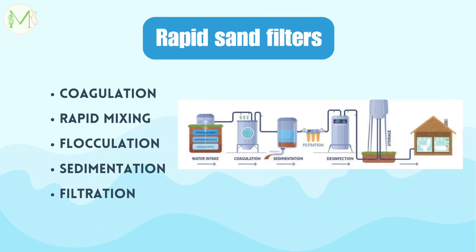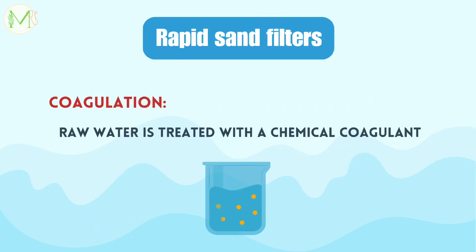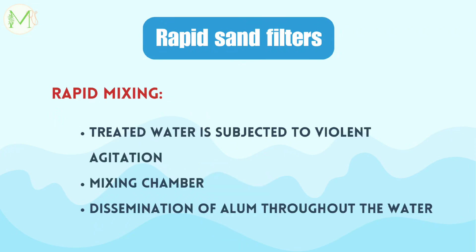Now let's move on to rapid sand filters, also known as mechanical filters. Before being subjected to rapid sand filtration, the water has to undergo coagulation, rapid mixing, flocculation and sedimentation. In coagulation, the raw water is first treated with a chemical coagulant such as alum. In the rapid mixing step, the treated water is then subjected to violent agitation in a mixing chamber for a few minutes. This allows a quick and thorough dissemination of alum throughout the bulk of the water.